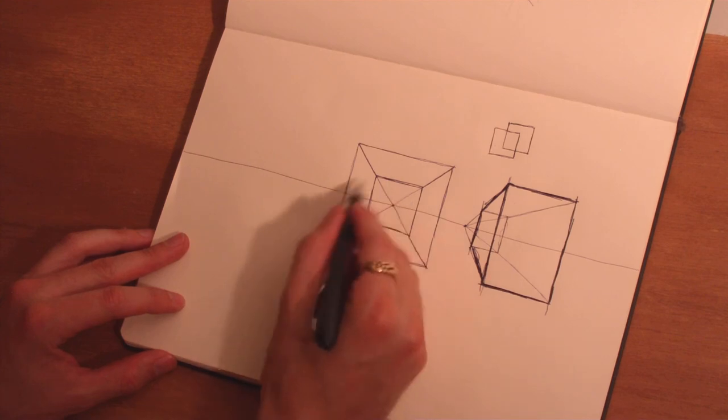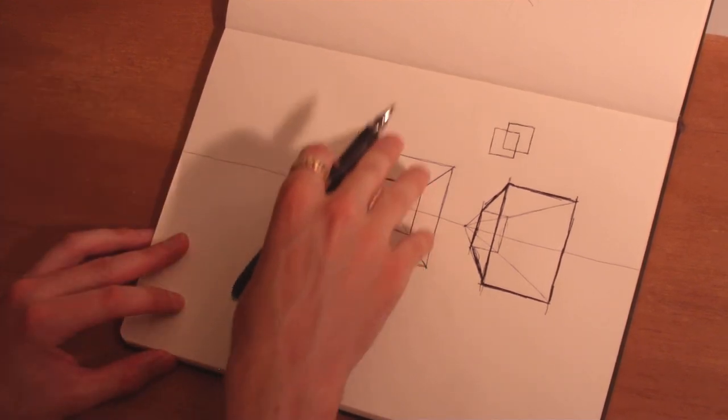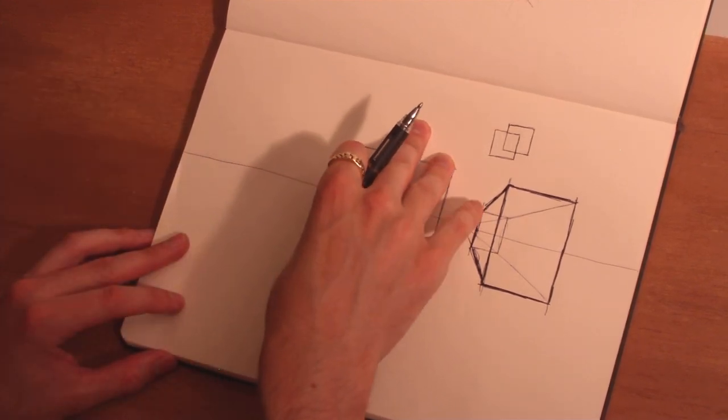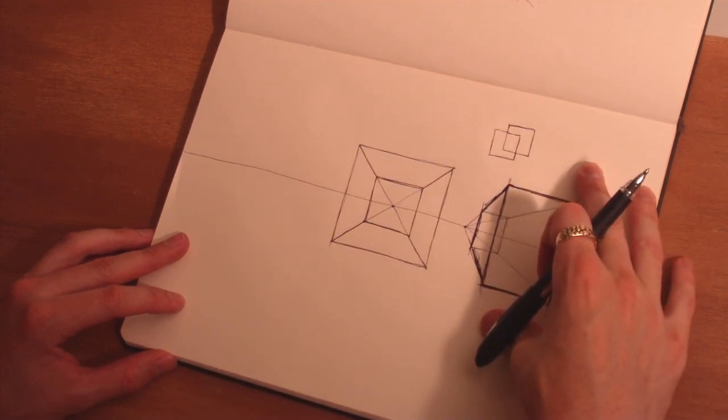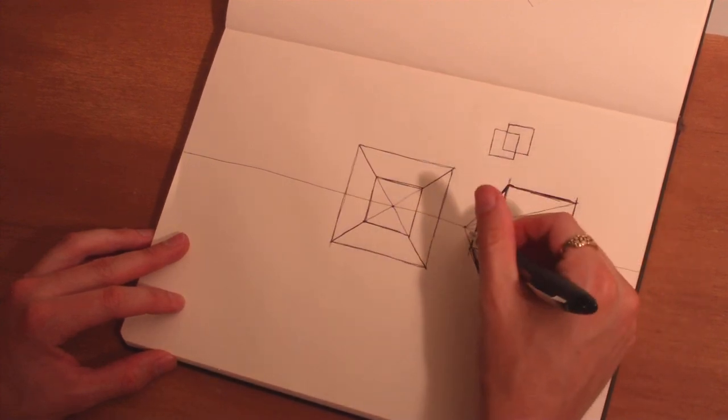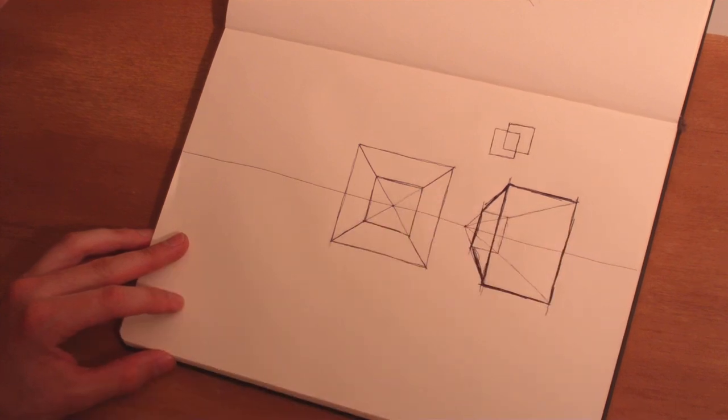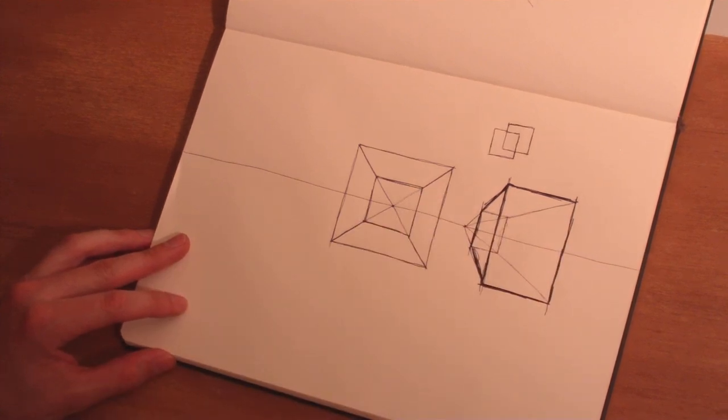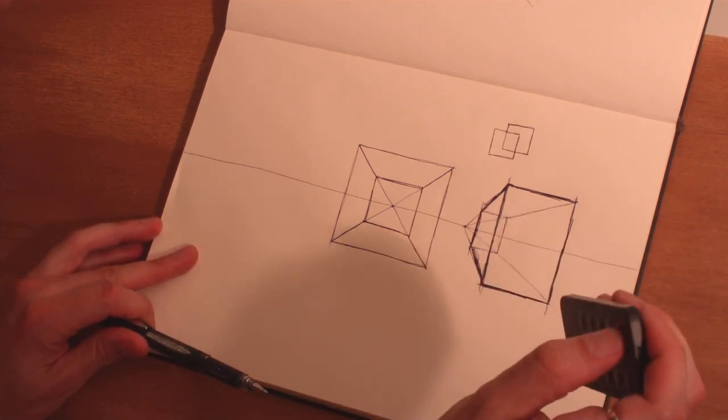We've drawn a cube in one point perspective centered over the vanishing point, and we've drawn another rectangular solid off to one side of the vanishing point. That's it for now.